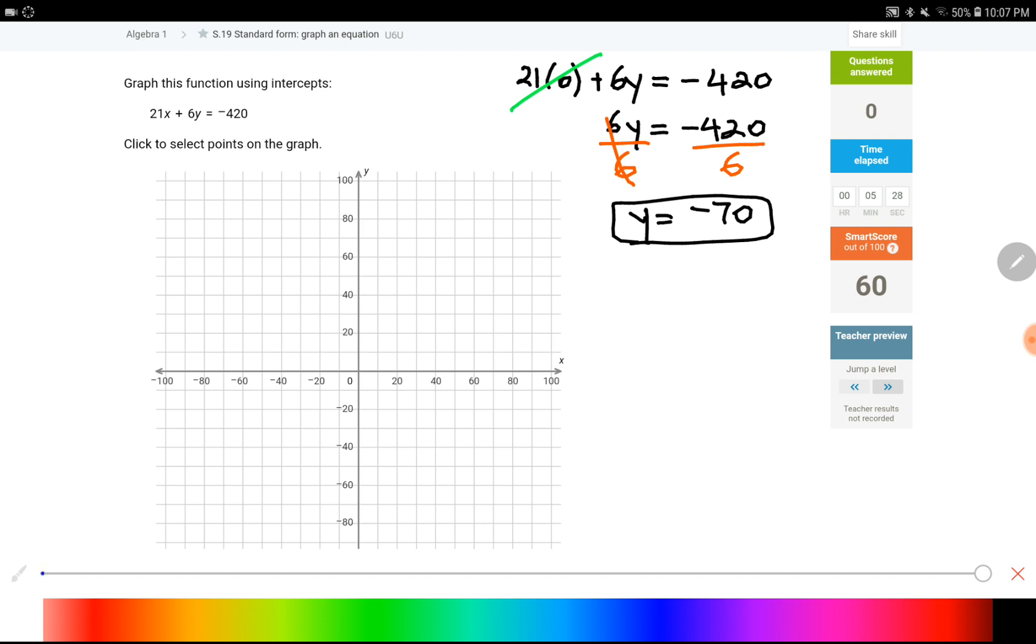Let's get to work. We write the equation. 21 times x plus 6 times y. But this time, I am going to plug in 0 for the y. Equals negative 420. This right here is gone. Bring down the left, bring down the equal, and bring down the right side. To get the x by itself, I divide everything by 21. So x would be equal to negative 20.